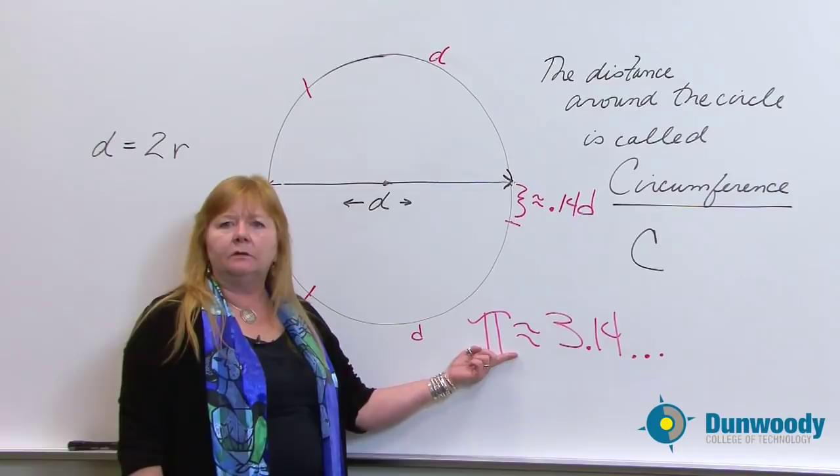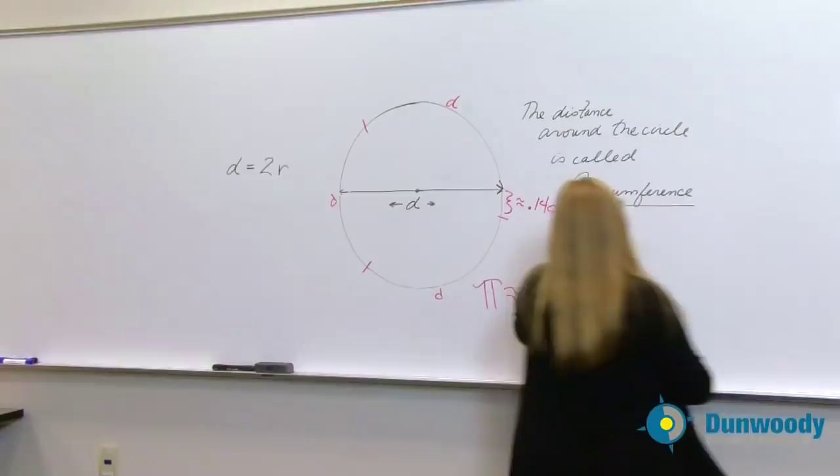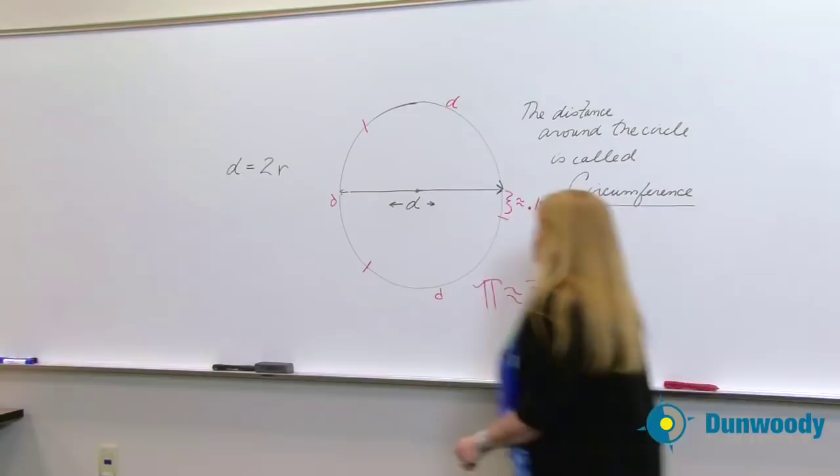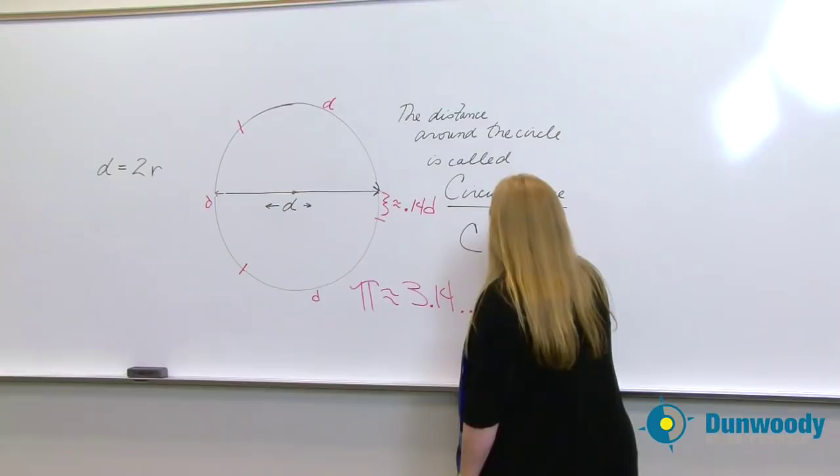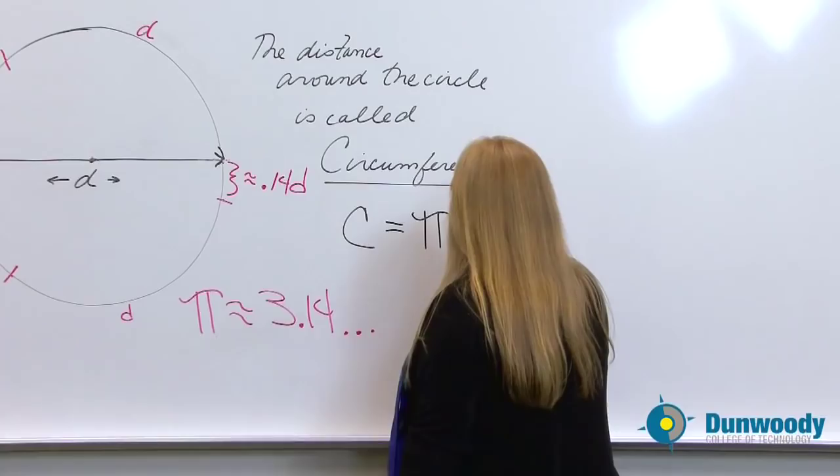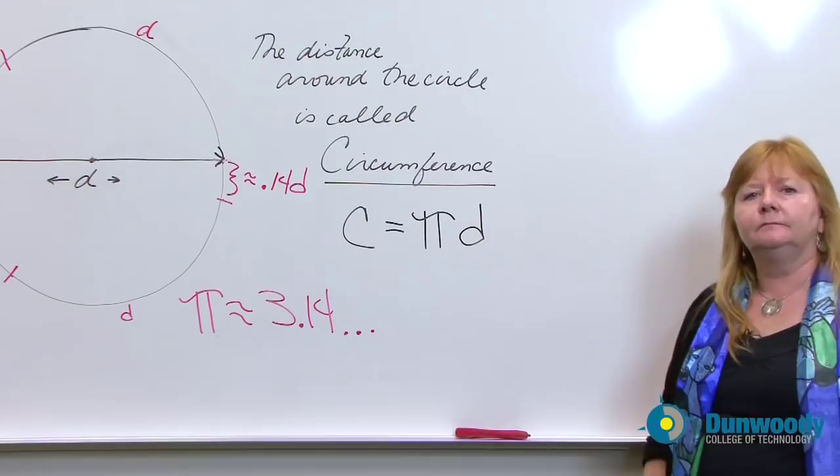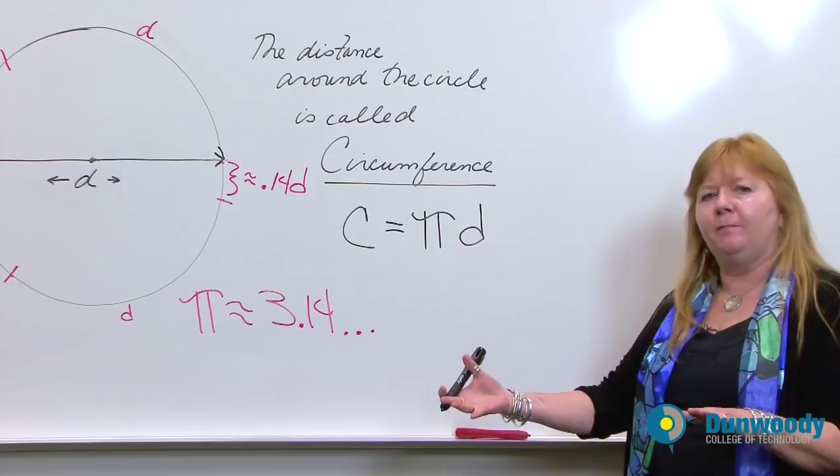So this is where pi came from. So with that in place, let's figure out what circumference is. Circumference of a circle is equal to pi times the diameter. And that's how you solve for circumference. So if you know the diameter, multiply it by pi, and you will have the circumference of the circle.